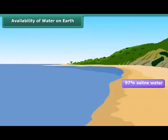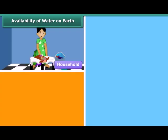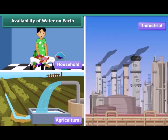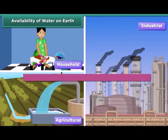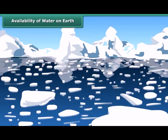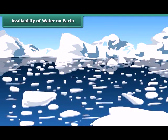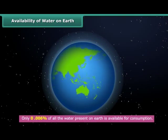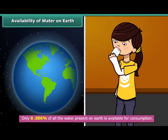However, 97% of the total water present on earth's surface is saline water. Hence, it is fit neither for household consumption nor for agricultural and industrial use. The remaining 3% is fresh water, two-thirds of which is frozen in glaciers and polar ice caps. Only 0.006% of all the water present on earth is available for consumption.